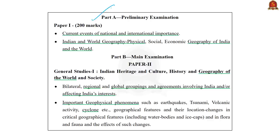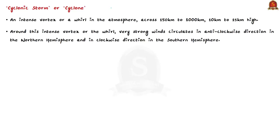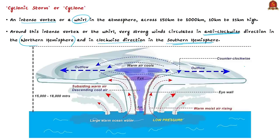The syllabus relevant to this discussion is given here for your reference. When we say cyclonic storm or cyclone, it refers to an intense vortex or whirl in the atmosphere that is moving rapidly round and round. Around this intense vortex, very strong winds circulate in an anti-clockwise direction in the northern hemisphere and in the clockwise direction in the southern hemisphere, and this difference is because of the Coriolis force.